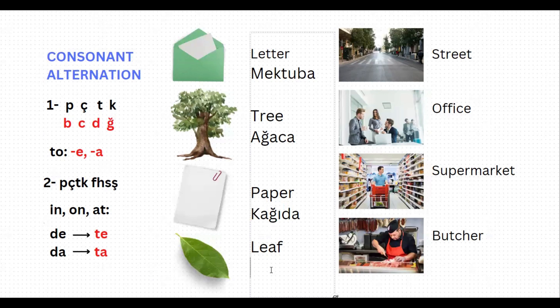And lastly, we have 'leaf,' which is 'yaprak' in Turkish. If you want to say 'to the leaf,' then it will be 'yaprağa.' This word is ending with k, which is one of peçeteğe, so it will alternate to soft g, and it will be 'yaprağa.' 'To the leaf' in Turkish is 'yaprağa.'